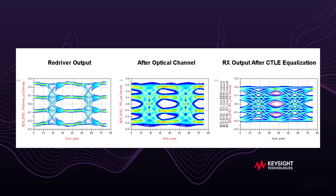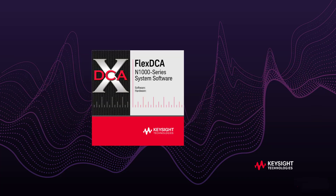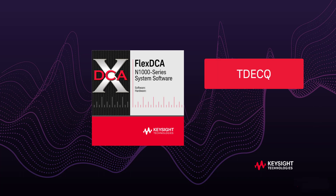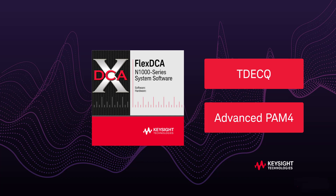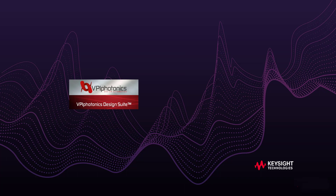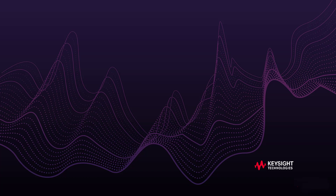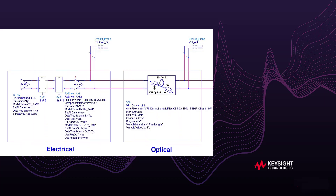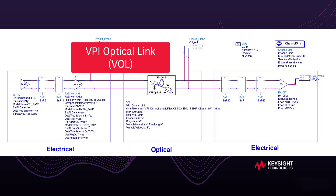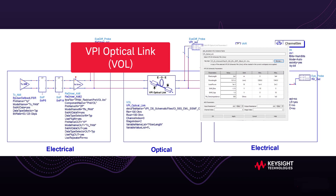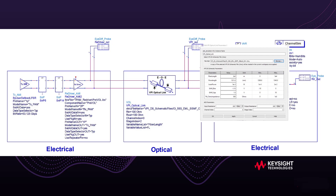You can see the results in ADS as seen here — three eye diagrams. Users can also send the result to the FlexDCA sampling scope to do further waveform analysis, including TDECQ and advanced PAM-4 measurement. If optical results are required, they can be plotted in VPI Design Suite using VPI Analyzer. The VPI Optical Link component in ADS allows you to easily control the optical design parameters from within the ADS environment, providing the ability to see how the performance changes with these varying design parameters.